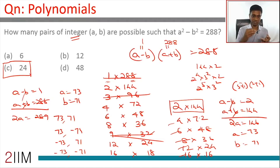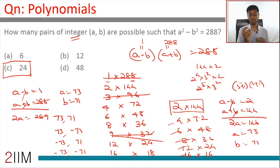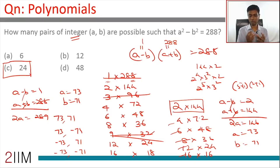In your exam context, remember every adjective matters: positive integers, negative integers, natural numbers, whole numbers, non-negative integers — each means something different and will limit your answer in some way. Keep a close eye on that detail, it is very very important.